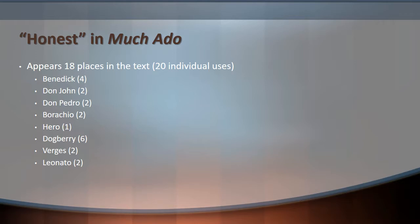Looking at the Shakespeare Concordance, we see that 'honest' is used in 18 different places in Much Ado, with 20 individual uses. This includes 'honestly,' 'dishonest' — anything with the word honest in it, any variation. Interestingly, it's spoken by Dogberry more than any other character, and then by Benedict. Some of the men speak it, and Hero speaks it once.